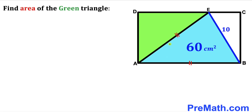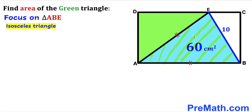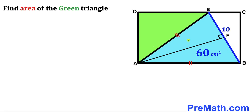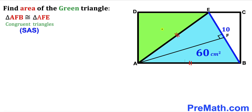Let's focus on the blue shaded triangle ABE. We can see this is an isosceles triangle since AE equals AB. I've dropped a perpendicular AF onto side EB, resulting in two right triangles: triangle AFE and triangle AFB. These are congruent triangles, so segment EF equals segment BF.